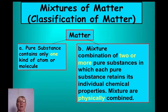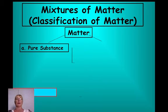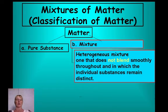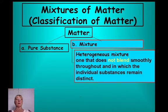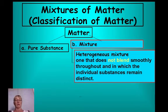If you wanted to separate the mixture of soup, you could pick out the carrots and put them in one pile and the broccoli in another. Looking at our flow chart: if you have something like soup where the mixture parts do not blend smoothly with each other and the individual substances like broccoli or carrots remain distinct, that's called heterogeneous — 'hetero' means different.